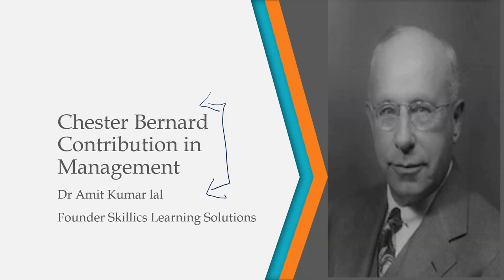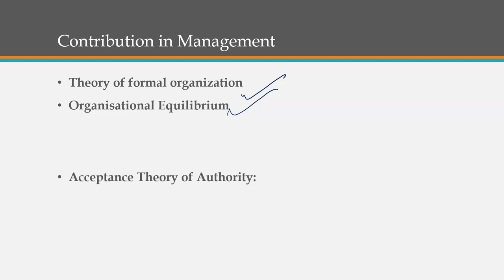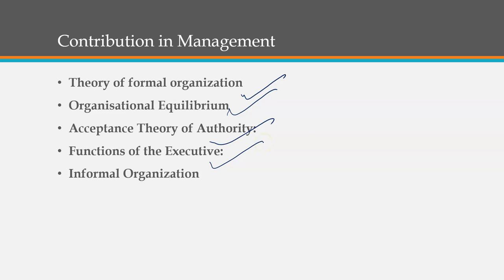In this lecture, we will discuss his contributions in detail. His five contributions were: first, theory of formal organization; second, organizational equilibrium; third, acceptance theory of authority; fourth, functions of the executive; and fifth, informal organization.